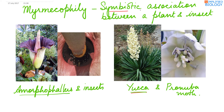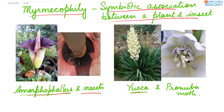A symbiotic association can be seen between plants and insects; this is referred to as myrmecophily. Example: Amorphophallus, the tallest flower — insects bring in pollination and in return stay inside the flower. Another example is Yucca and Pronuba moth: the moth carries out pollination and in return lays eggs inside the ovary. By the time the ovule develops into a seed, the egg develops into larvae and comes out of the ovary.